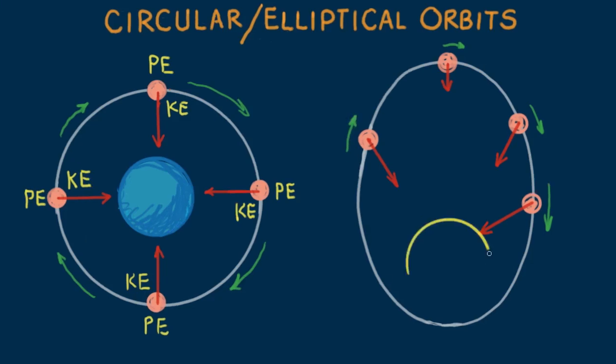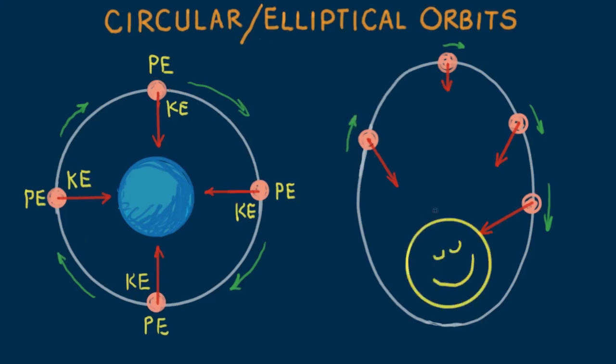Kepler was the first to discover the elliptical paths of planets about the Sun early in the 17th century. He discovered that planets travel fastest closest to the Sun and slowest farther away. But he had no explanation as to why.